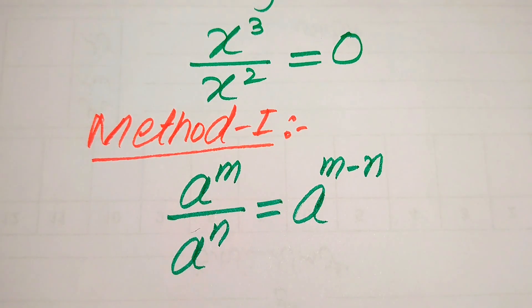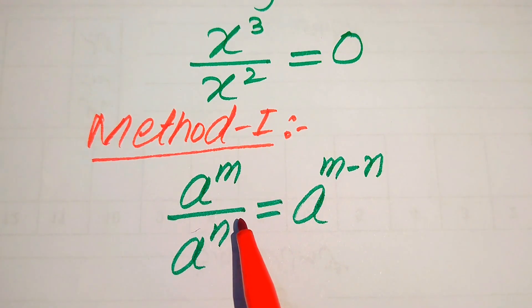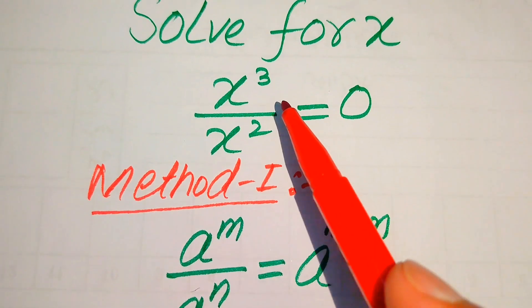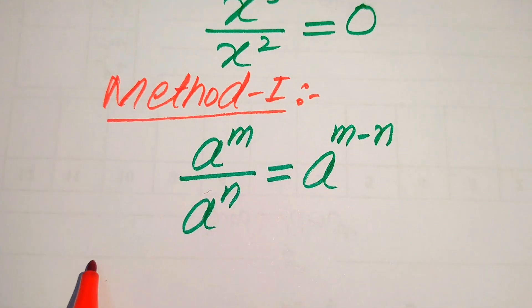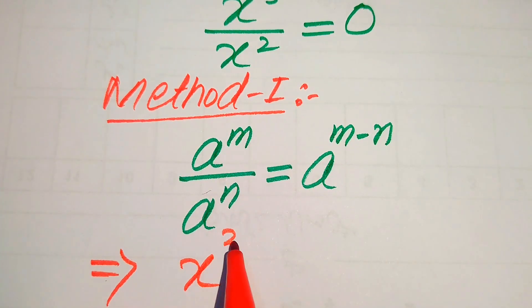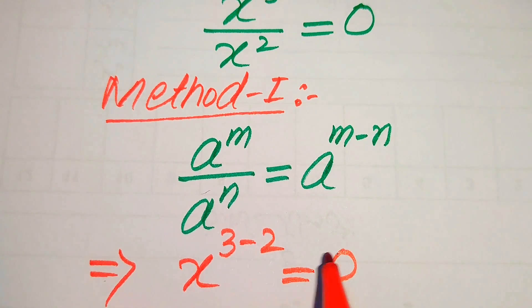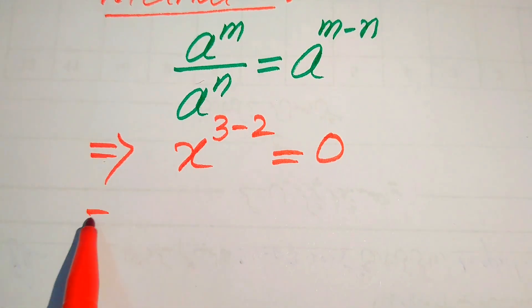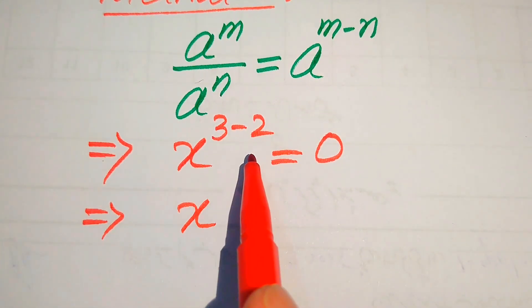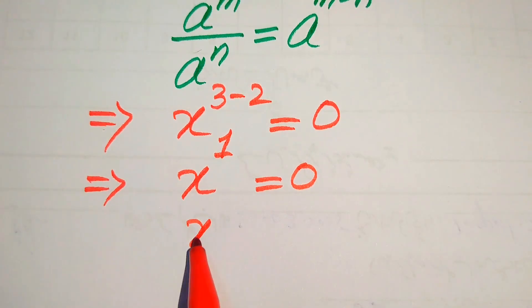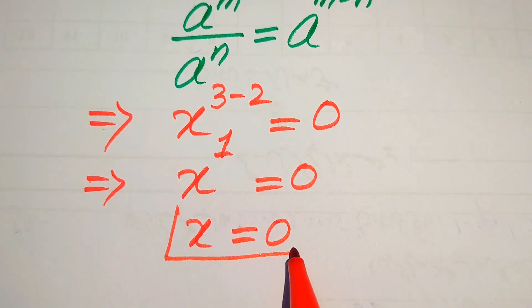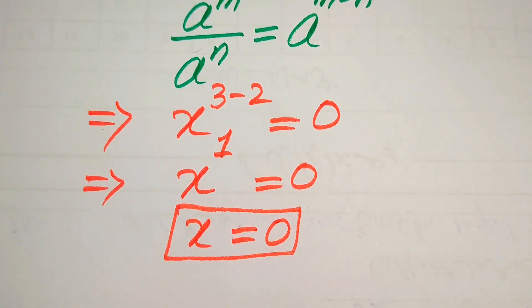This means if we have m and n as exponents, we subtract the smaller from the bigger. In the same case, the exponents of the two terms are 3 and 2, so we get x to the power of 3 minus 2 equals 0. In the next step, 3 minus 2 equals 1, so x to the power of 1 equals 0, and we easily get x equals 0. This is the only root of the given equation.